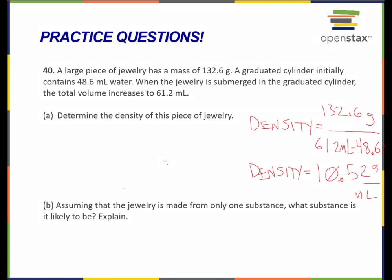So if it's made of only one substance, then it's made of silver, because silver has a density of 10.5 grams per milliliter.